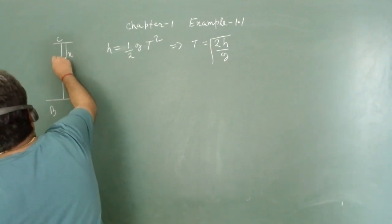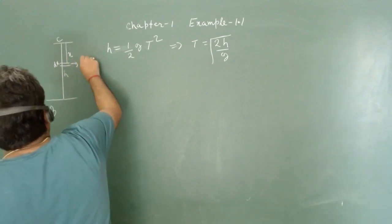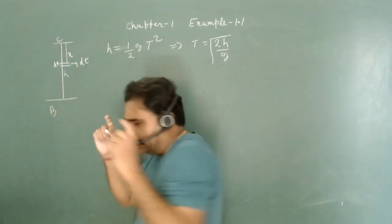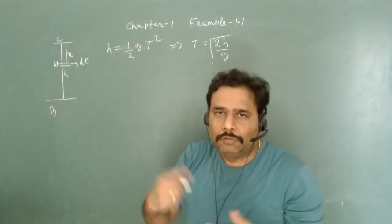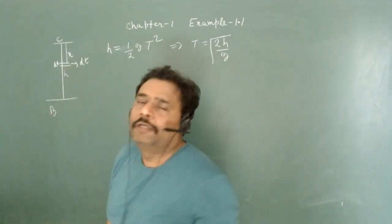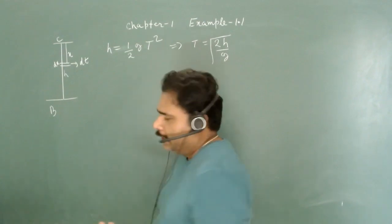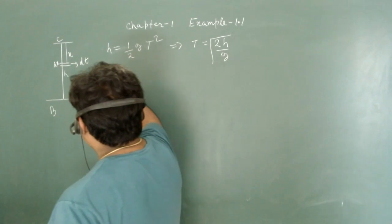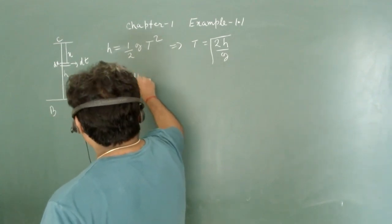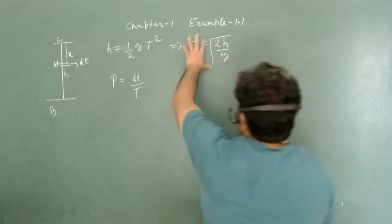If at distance x the particle travels a small distance dx in time dt, we can take a snapshot at a random time and calculate how much distance is traveled in that particular dt. The probability is nothing but dt divided by the total time T.